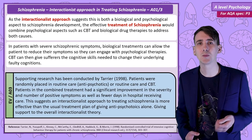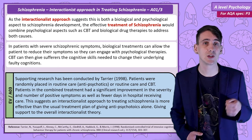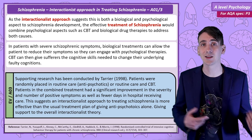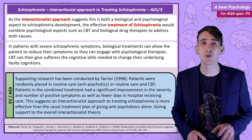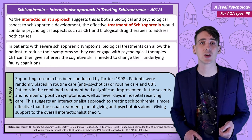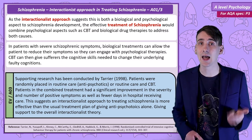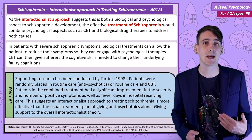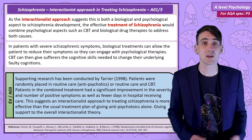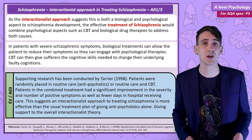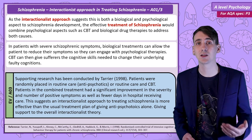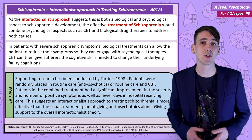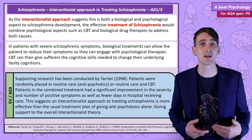Research by Tarrier shows there is a difference between giving a patient routine care — which is antipsychotics alone — or a combination therapy of antipsychotics and CBT. It was found that combination treatment patients showed a significant improvement in both the severity and number of their positive symptoms, and they also spent fewer days in hospital than the antipsychotics-only group. This is good evidence that the interactionist approach to treating schizophrenia is more effective, potentially both reducing symptoms and giving sufferers the cognitive skills needed to manage their own symptoms.